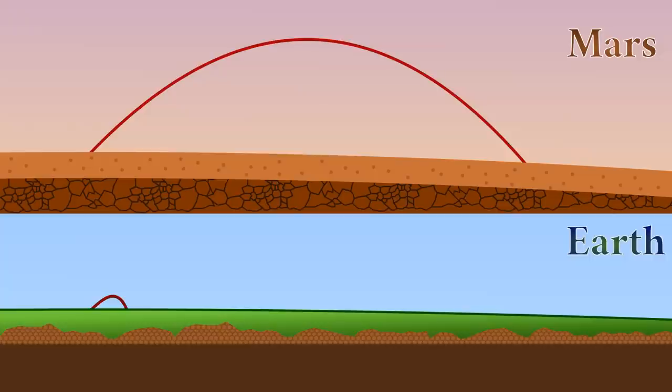To sum up, shells from the 88mm FLAC go higher and further on Mars compared to Earth due to lower gravity and thinner atmosphere.